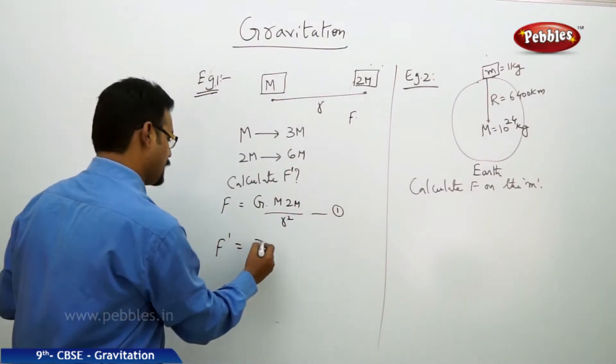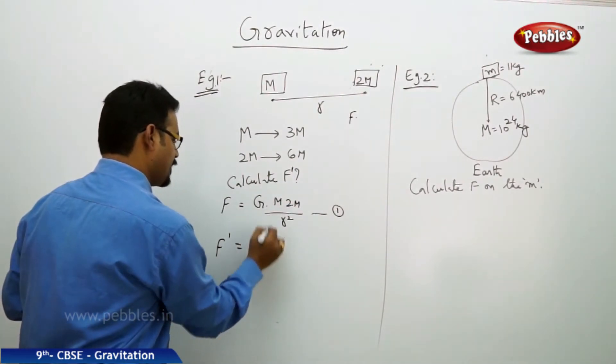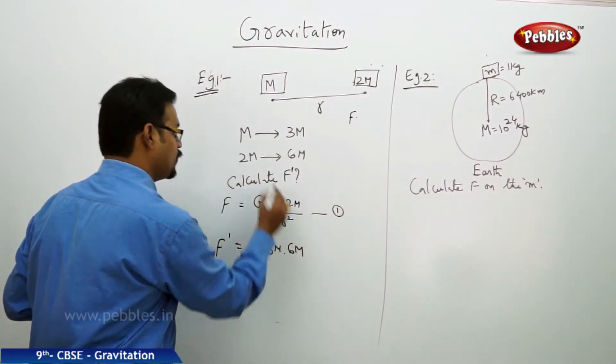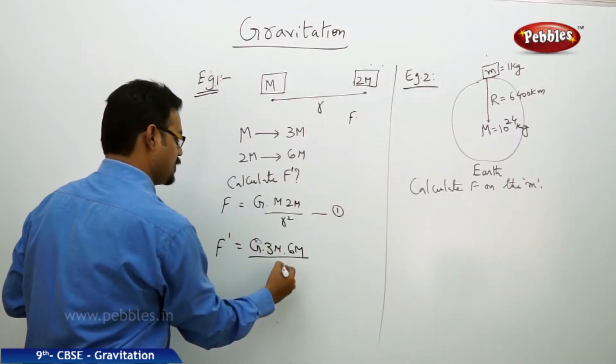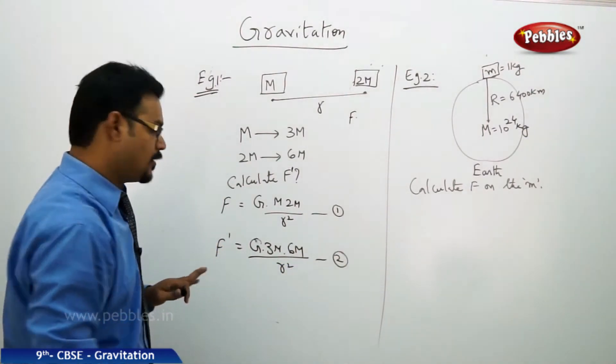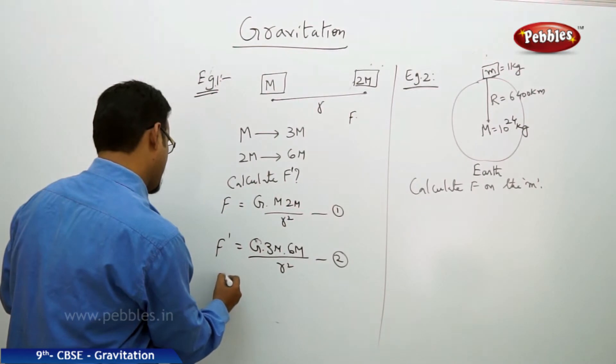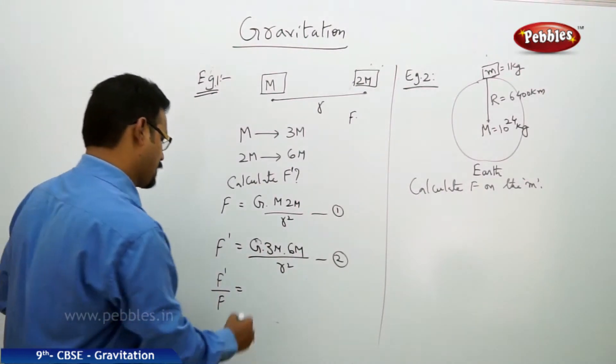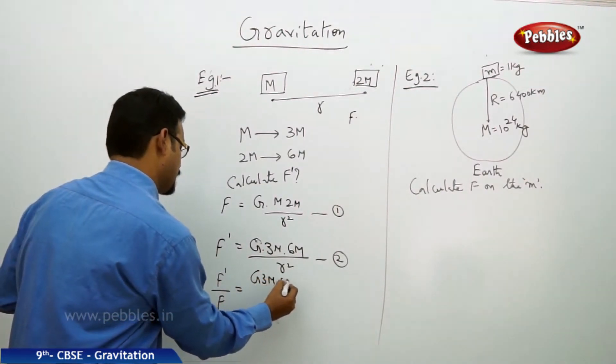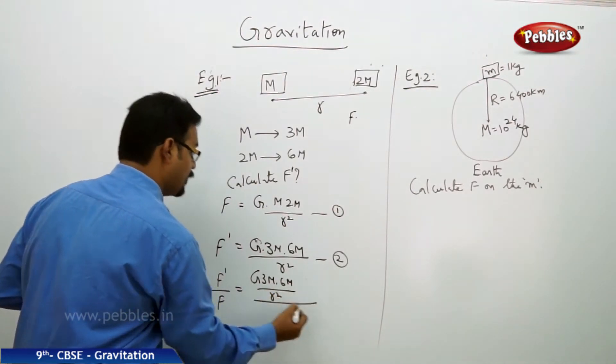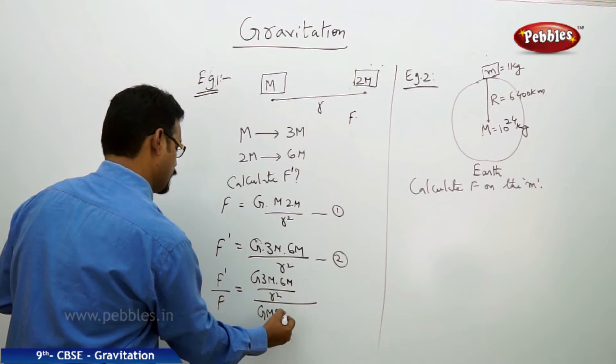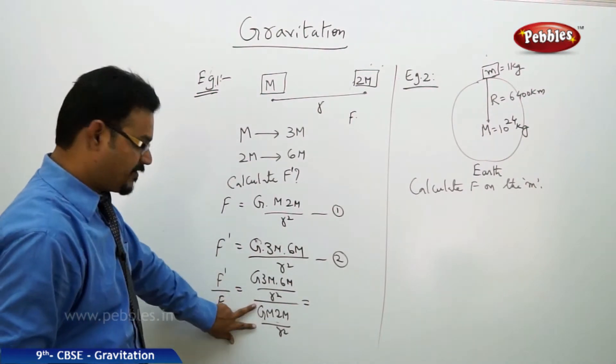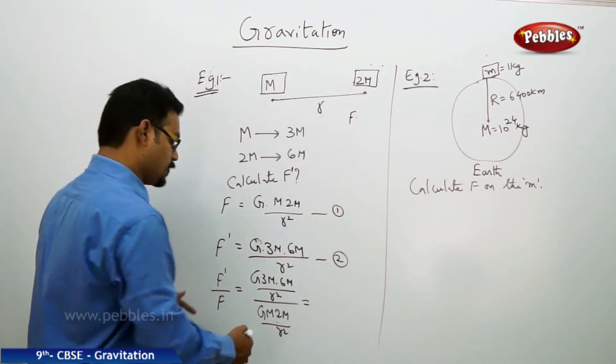So G, instead of m I will write 3m, into instead of 2m I write 6m by same distance r square. Equation 2. Now if equation 2 f dash by f, equation 2 by equation 1, what happens? G 3m 6m by r square whole divided by this f, G m 2m by r square.